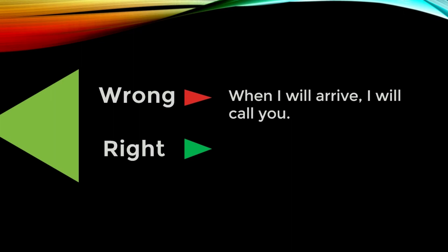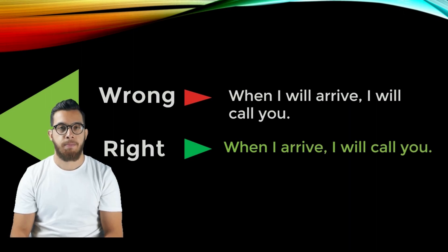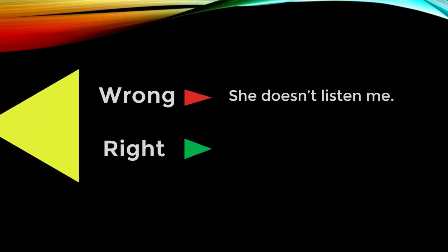'When I will arrive, I will call you' — using 'will' twice is unnecessary. You're signaling that when you reach a place you will do a required task. So the correct sentence is: 'When I arrive, I will call you.'